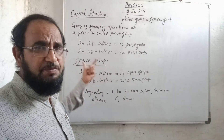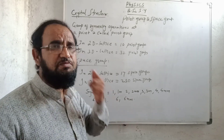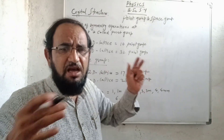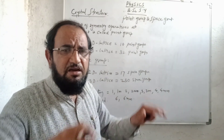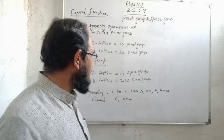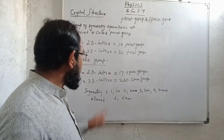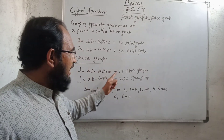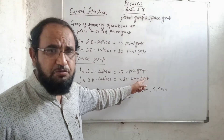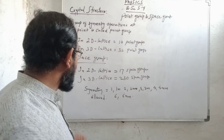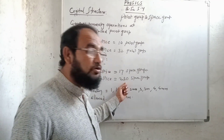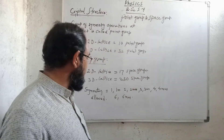Space group: if we have a space lattice where the environment about the lattice points is the same, then in two dimensions we have 17 space groups, and in three dimensions we have 230 space groups.